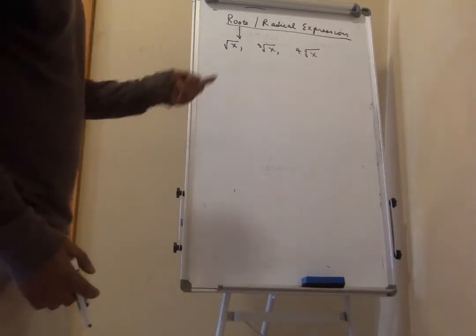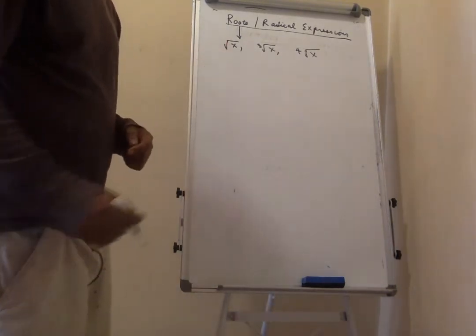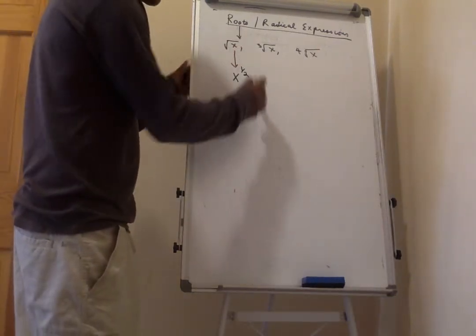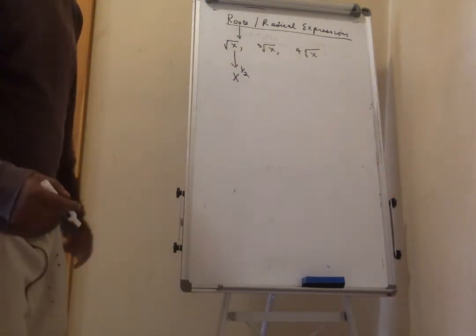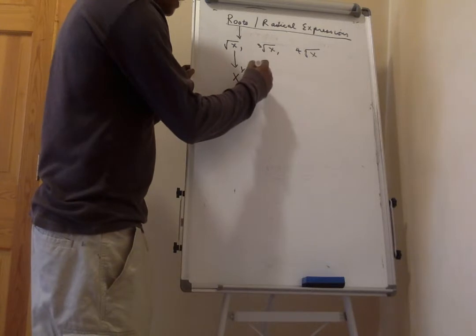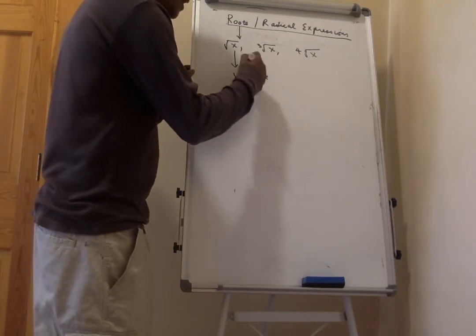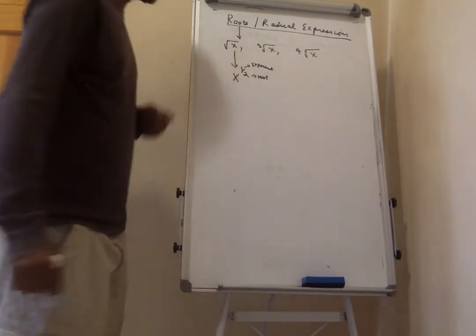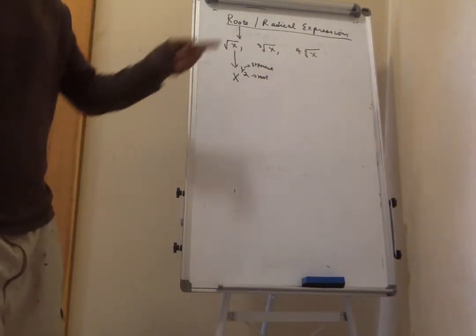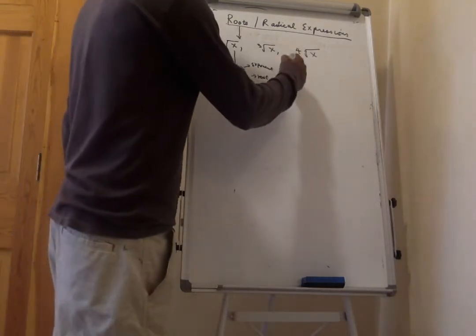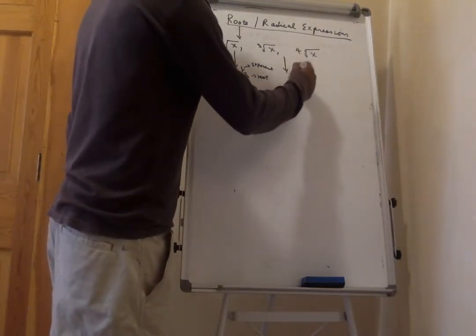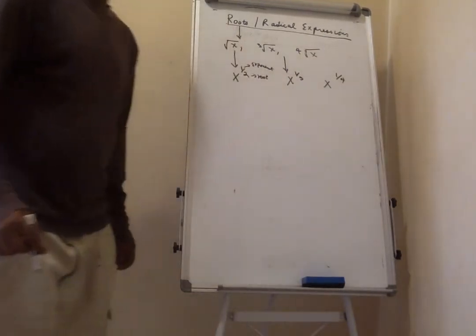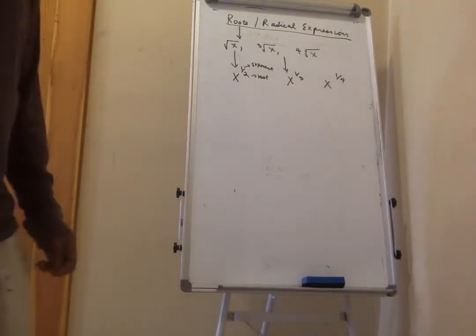To give you the coordination between roots and radical expressions, we can rewrite them in a different form. The square root of x means x to the power of one-half — because it is a fraction, the numerator is the exponent and the denominator is the root. So the square root of x is x to the one-half, the cube root of x is x to the one-third.